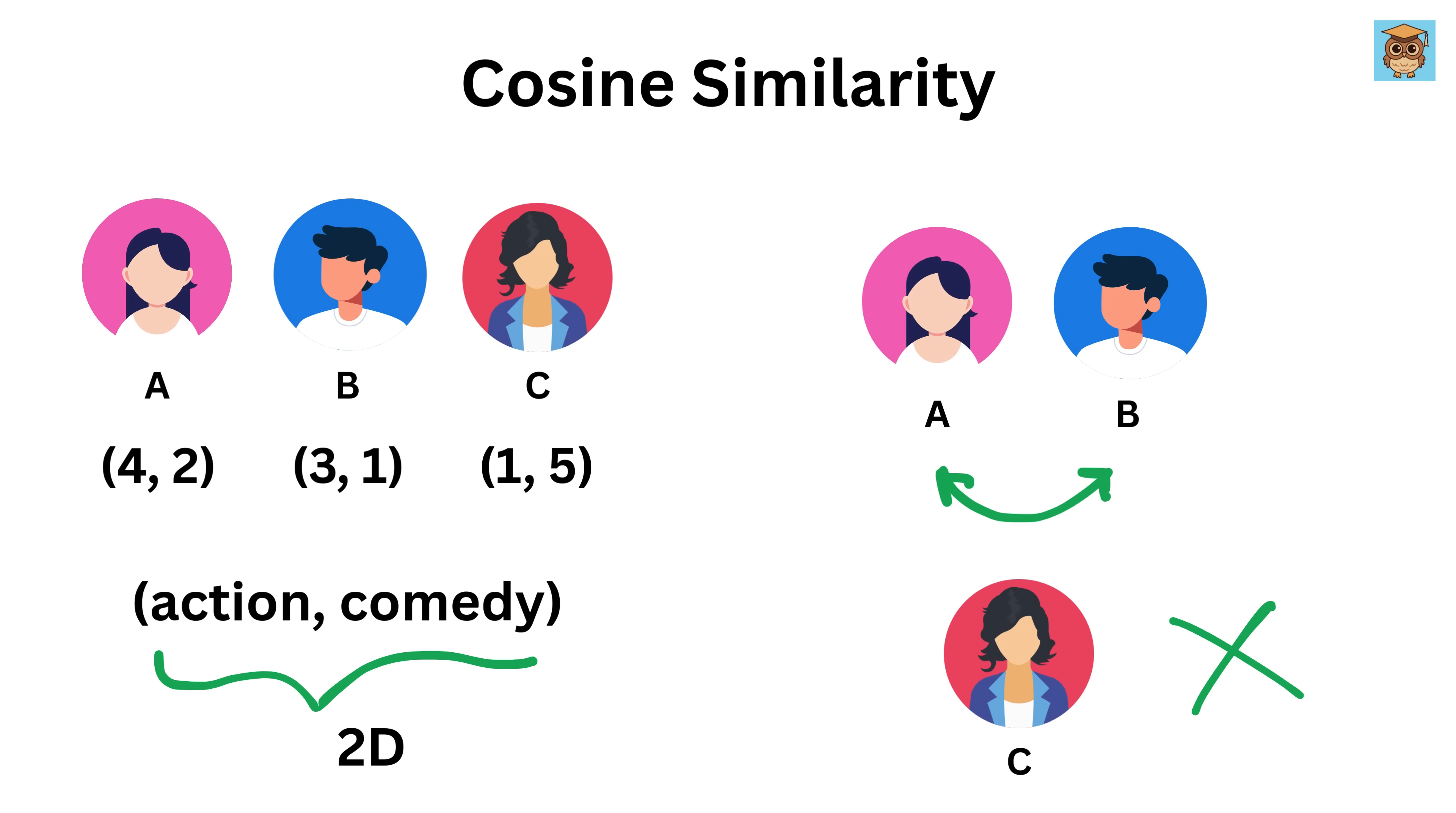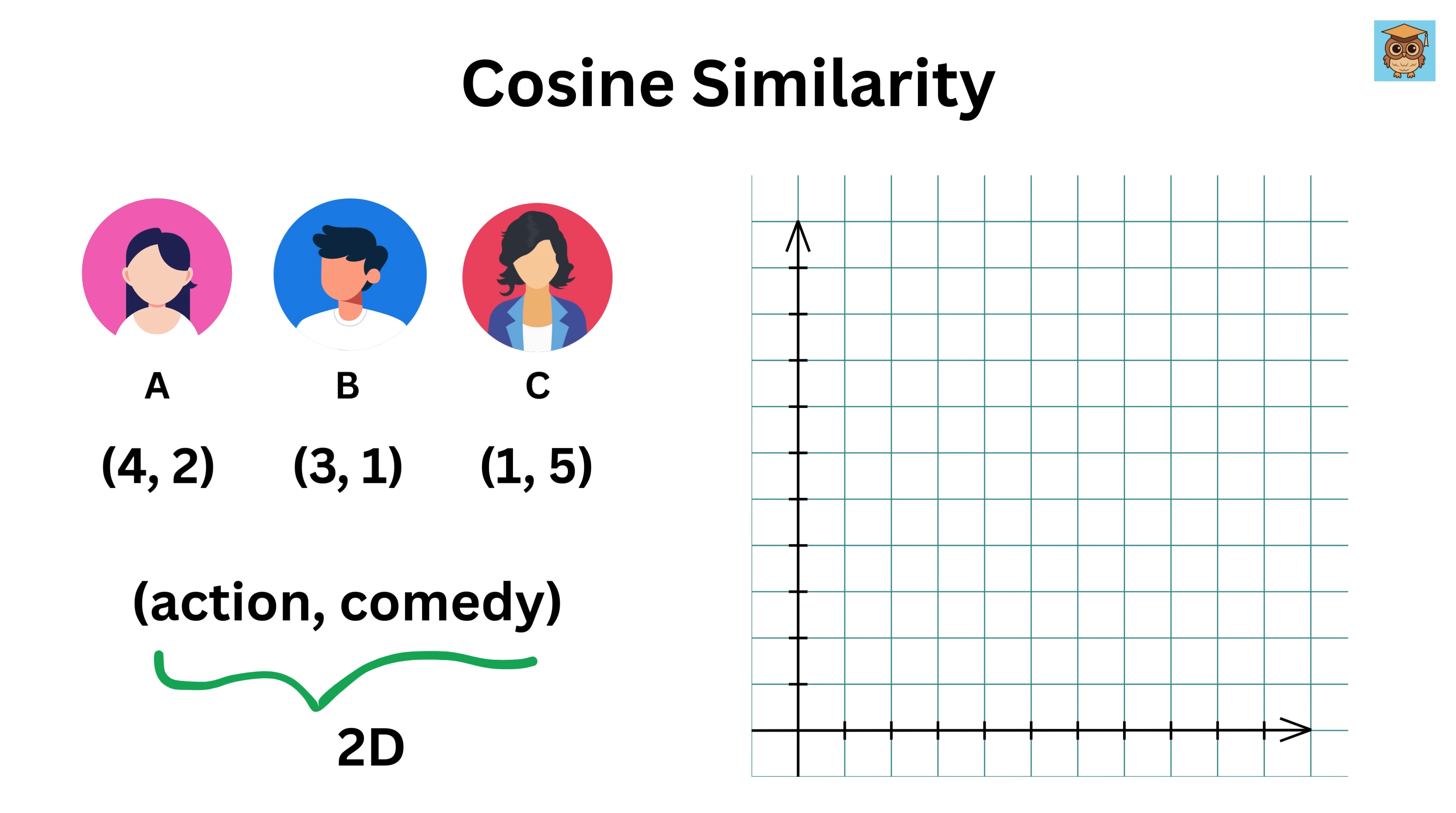But what if this extends to multiple genres and multiple users like we have in our original example? We cannot use observation there, and in that case we use cosine similarity. Now if I plot the vectors of the ratings of A, B, and C, A points somewhere here and B points in almost the same direction, but C is nowhere close to A or B.